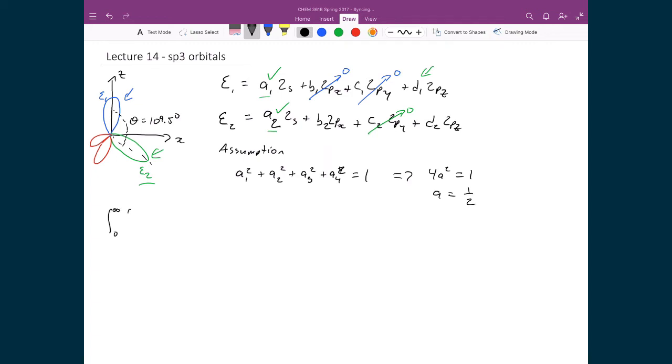0 to infinity, 0 to pi, 0 to 2 pi. And we're going to have ξ1 times ξ1 times r squared, sin theta, dr, d theta, d phi. And that's equal to 1. So we still keep this integral. 0 to infinity, 0 to pi, 0 to 2 pi.